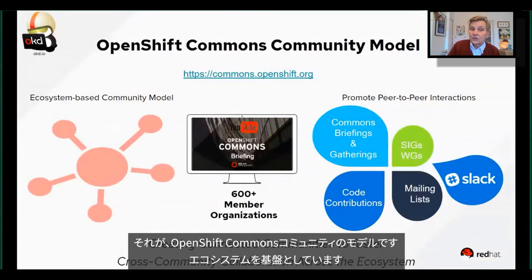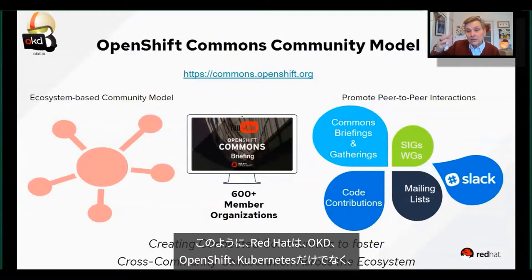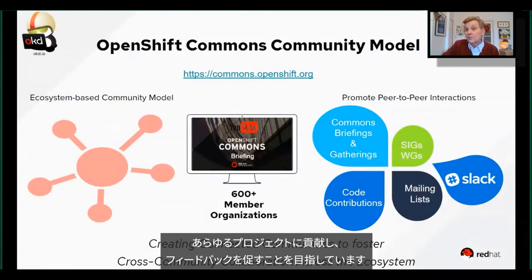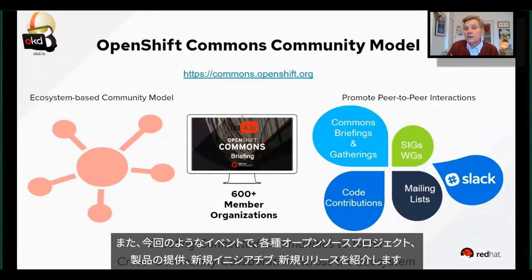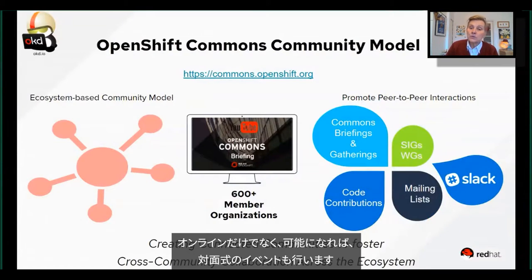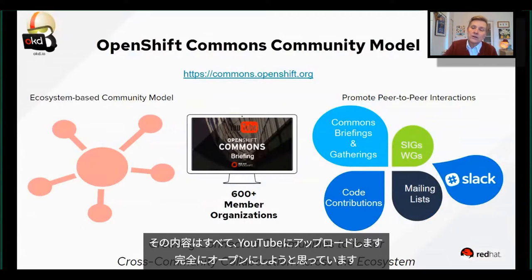That's really the OpenShift Commons community model — it's always ecosystem-based. We really like to think of ourselves not as trying to get you to contribute just to OKD, OpenShift, or Kubernetes, but to all of the projects — to get you not just to contribute, but to use and give feedback to these projects. We do that by promoting different open source projects, different product offerings, new initiatives, and new releases in OpenShift Commons briefings and at gatherings like this, virtually or in person. All of the content we do, we put on YouTube, and it's all up there.